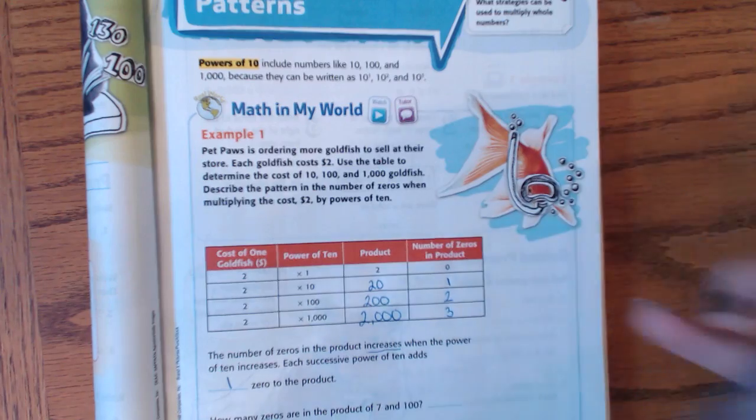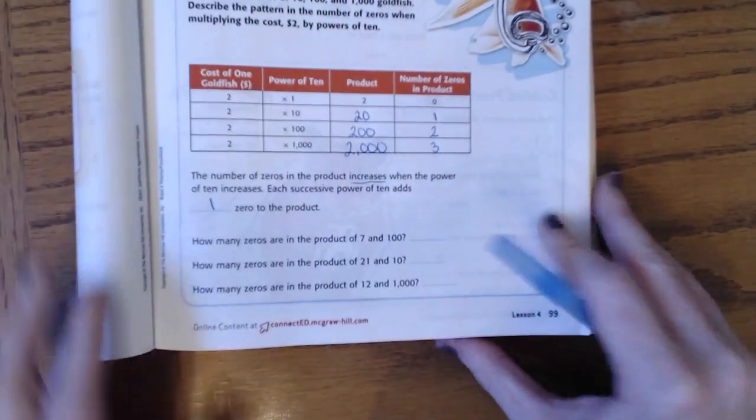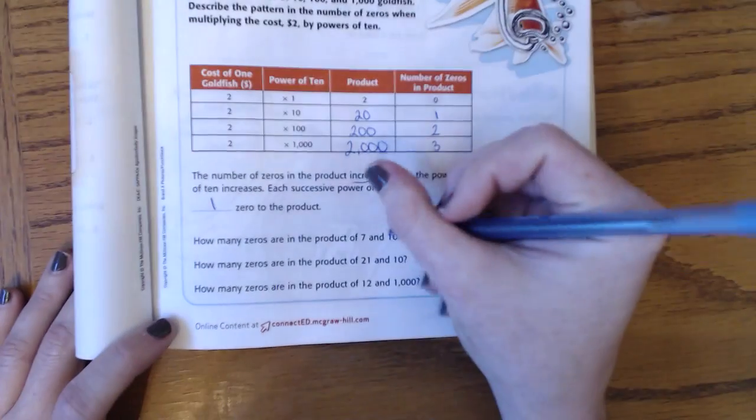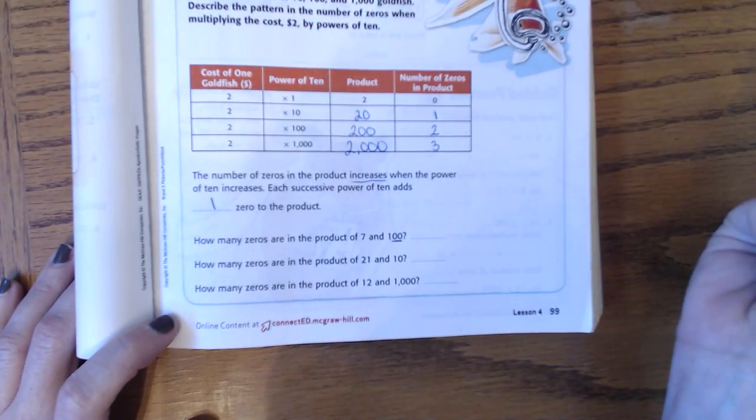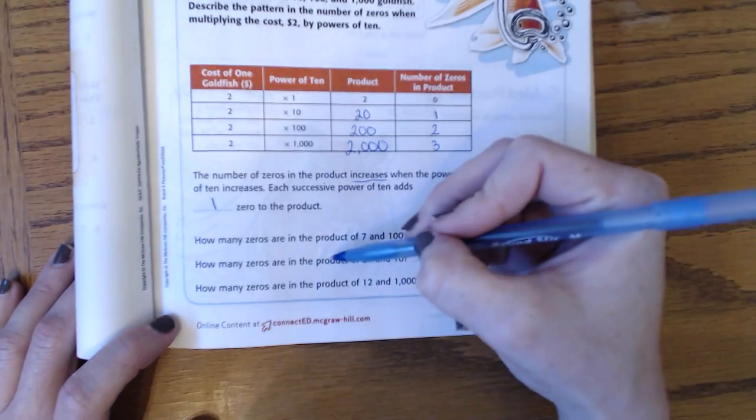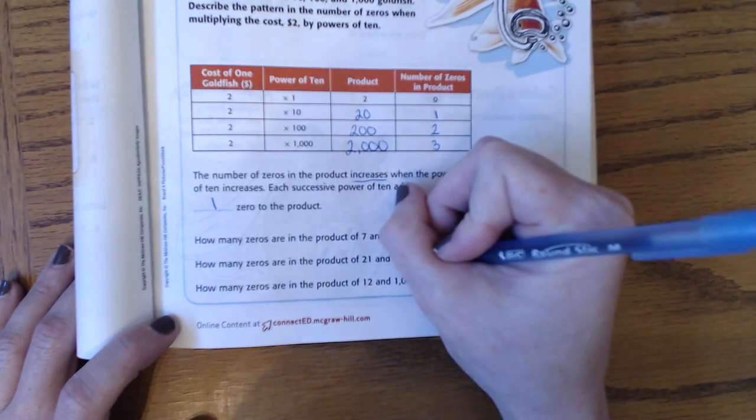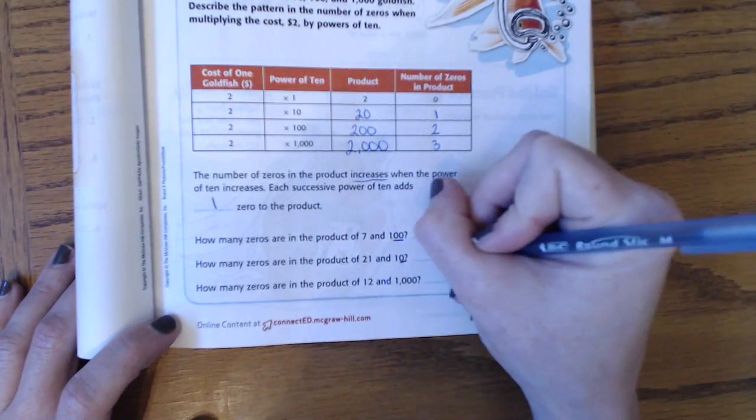How many zeros are in the product of 7 times 100? Well, how many zeros does 100 have? 2. How many zeros are in the product of 21 and 10? Well, how many zeros does 10 have? 1.